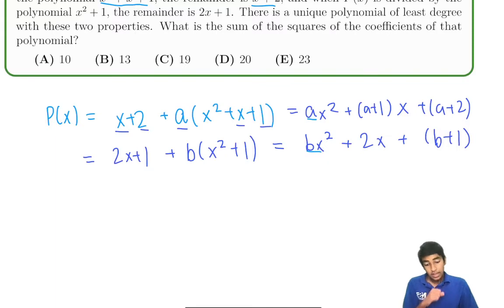But you know what we can do is see that everything here is a multiple of x. Everything here is a multiple of x. The only constant parts are a plus 2 and b plus 1. So the constants must be equal. Okay. So that's something we do know for sure.